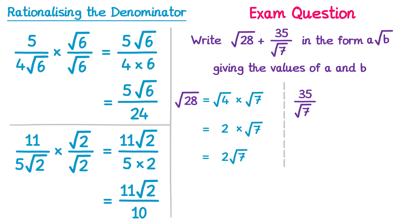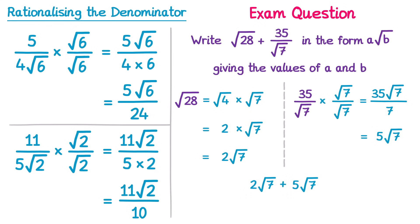Well we can rationalise the denominator here. Let's multiply by root 7 over root 7. On the top, 35 times root 7 is 35 root 7, and on the bottom root 7 times by itself is 7. This one can simplify — we've got 35 over 7, and 35 does divide by 7 nicely, that gives you 5. So this is just 5 root 7. So we've changed the root 28 into 2 root 7, and the 35 over root 7 into 5 root 7, we just need to add them together. So 2 root 7 plus 5 root 7 — you do 2 plus 5 to get 7 root 7. This question asked us to give the values of a and b, so a is the number in front of the root, that's 7, and b is the number inside the root, which is also 7.